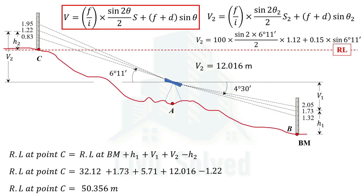This is how the calculation for horizontal distance and reduced level is performed for this type of example. This is all from this video. Thank you for watching.